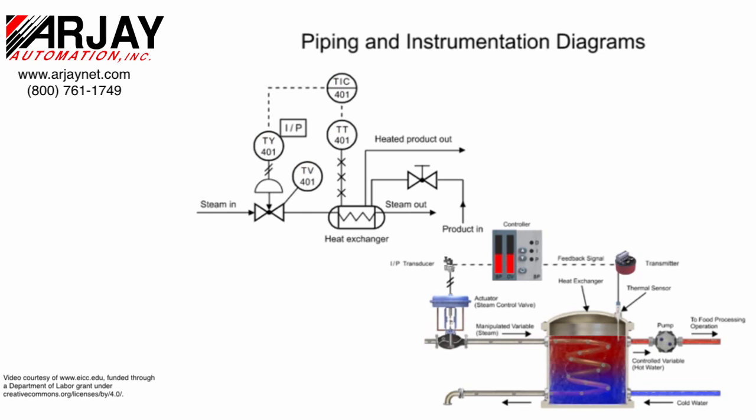The instrument connected to the heat exchanger contains two other types of information. The second letter in the functional identifier indicates it is a transmitter, and the balloon with no line inside its symbol indicates the device is field mounted.